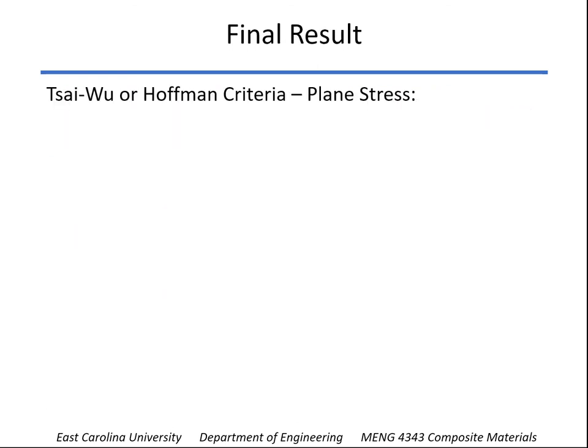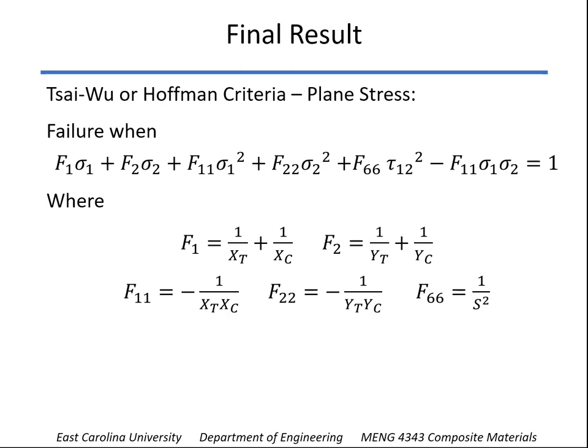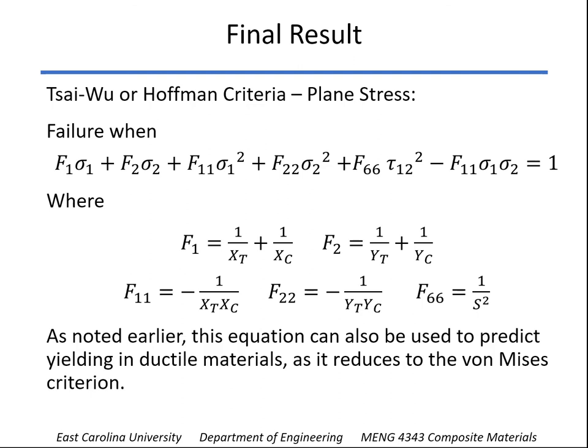So to wrap it up, here is our final failure criterion, which, again, will be either Tsai-Wu or Hoffman, and will reduce to the von Mises. We put in that value for F1-2, and so there is our failure criterion. Those are the values F1 and F2, F1-1 and F2-2, and F6-6. And again, as we noted earlier, now you can use this equation to predict the yielding in ductile materials as well as failure of composite materials.